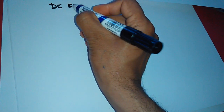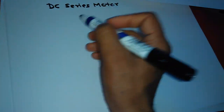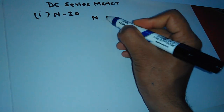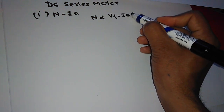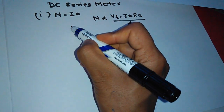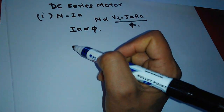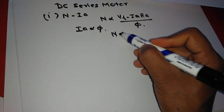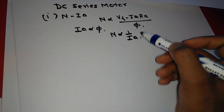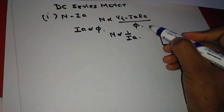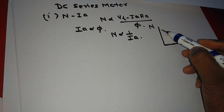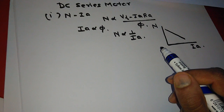Now we will see the DC series motor characteristics. First, the speed versus armature current characteristic. From the speed equation, N is proportional to Vt minus IaRa upon phi. In DC series motor, Ia is proportional to phi. So for low armature current, the IaRa term is neglected, and we get N is proportional to 1 upon Ia — an inverse characteristic. Plotting speed on the y-axis and Ia on the x-axis, we get an inverse curve.